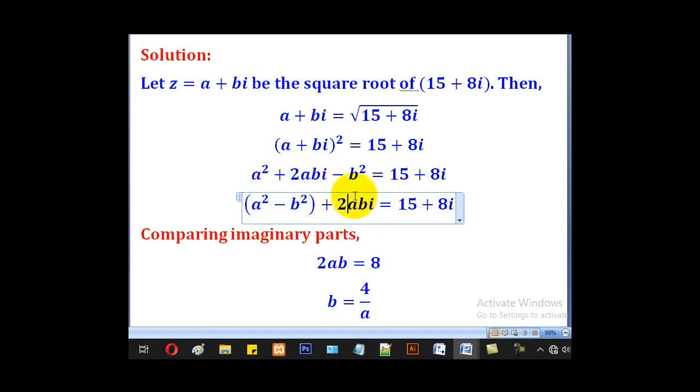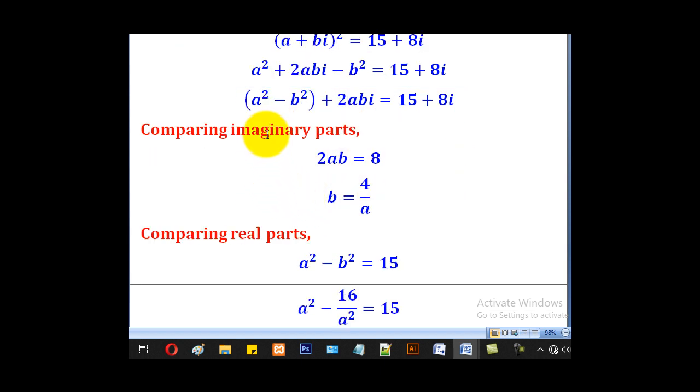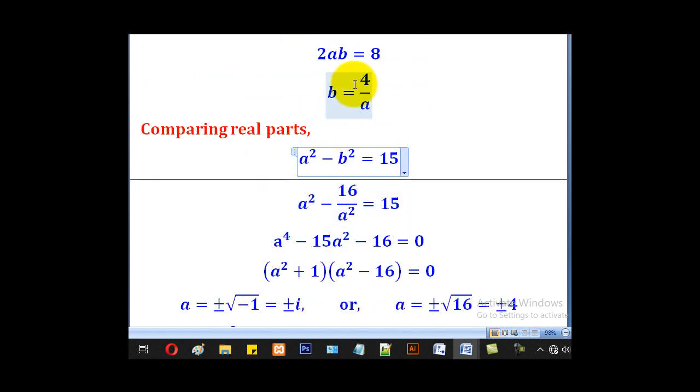Now we shall compare. Comparing the imaginary parts, we shall say 2AB is equal to 8. We shall come up with B equal to 4 over A. Comparing real parts, we shall come up with A squared minus B squared equal to 15. But we already know that B is 4 over A, so substitute 4 over A here to get 16 over A squared because B was squared.